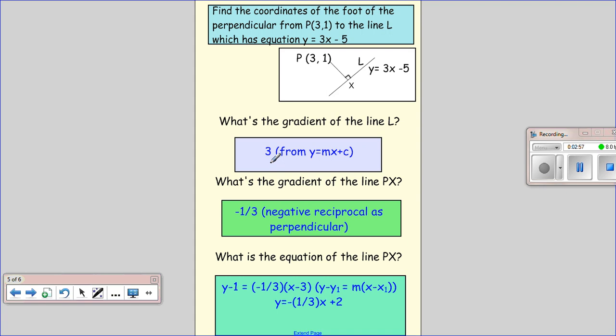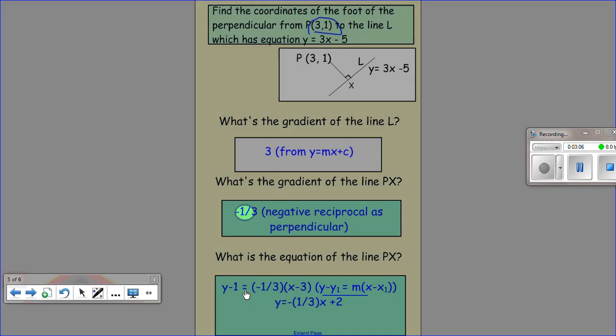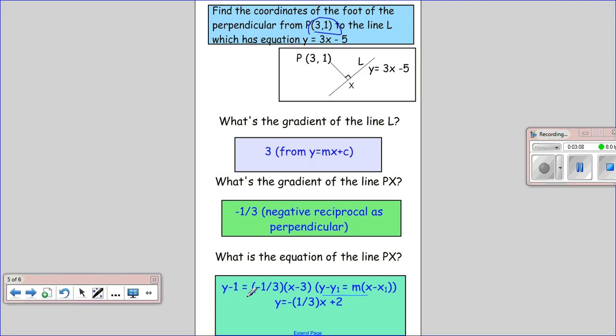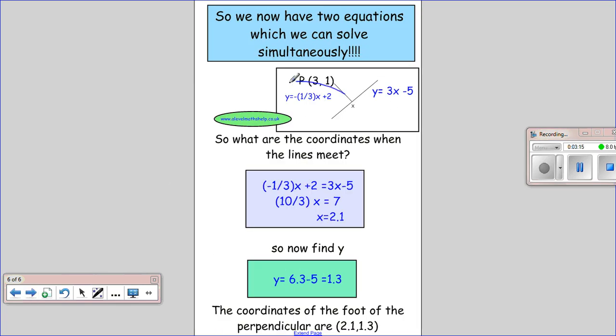What's the equation of our line PX? We just substitute using our point and our gradient. So I get y-1=(-1/3)(x-3). After sorting out, I get this equation. Now I've got both equations of each line and I want to know where they meet.